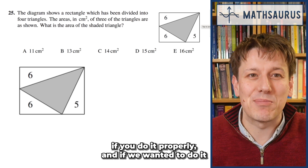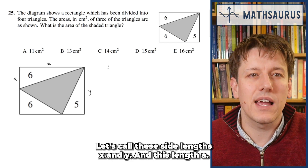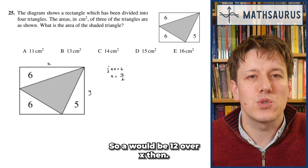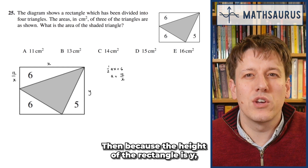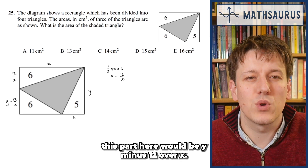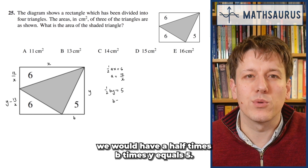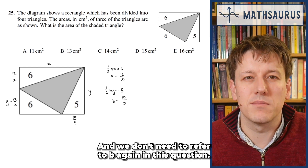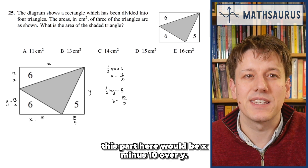This is actually a nice question if you do it properly. Let's call the side lengths X and Y, and this length A. Then a half times A times X equals 6, so A would be 12 over X, and we can stop referring to A. Because the height of the rectangle is Y, this remaining part here would be Y minus 12 over X. If we call this bit B temporarily, then a half times B times Y equals 5, so B equals 10 divided by Y. We don't need to refer to B again. Because X is the total width of the rectangle, this part here would be X minus 10 over Y.